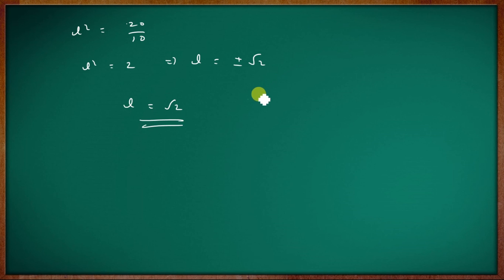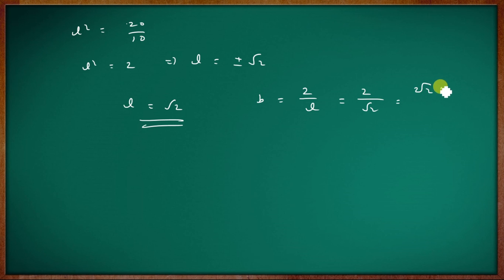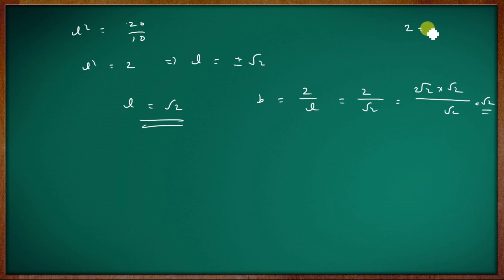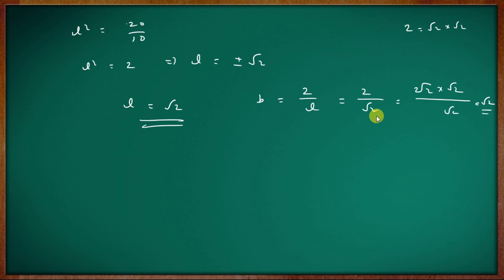Therefore L = √2 and B = 2/√2 = √2. So length equals breadth equals √2, and height equals 1. These are the dimensions for minimum cost.